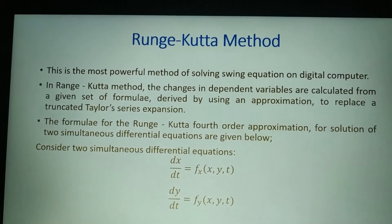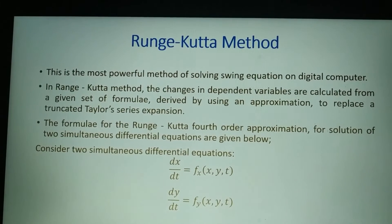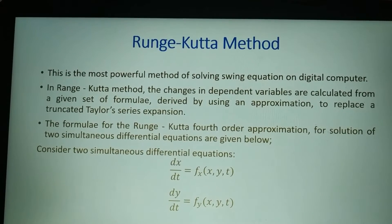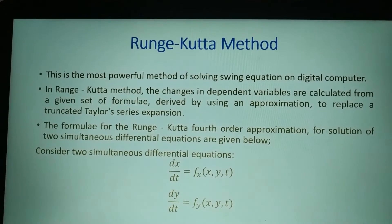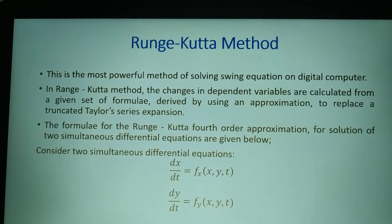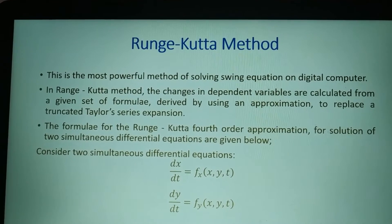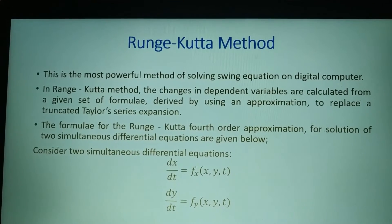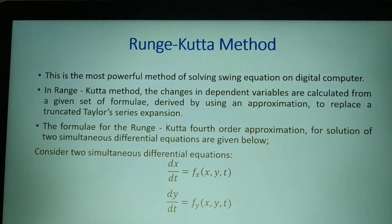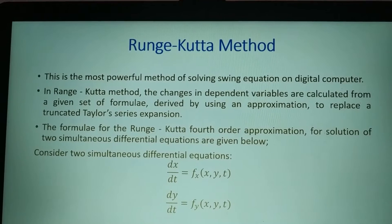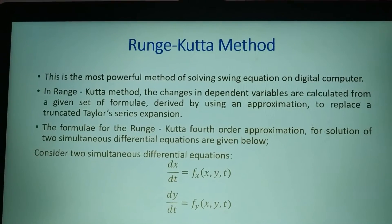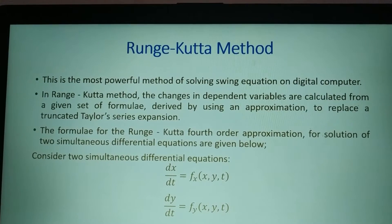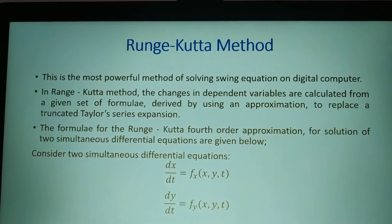First we will consider the general Runge-Kutta method and then apply it to the swing equation. For the general Runge-Kutta method, we assume two differential equations as done in the modified Euler method: dx/dt = f(x, y, t) and dy/dt = g(x, y, t).